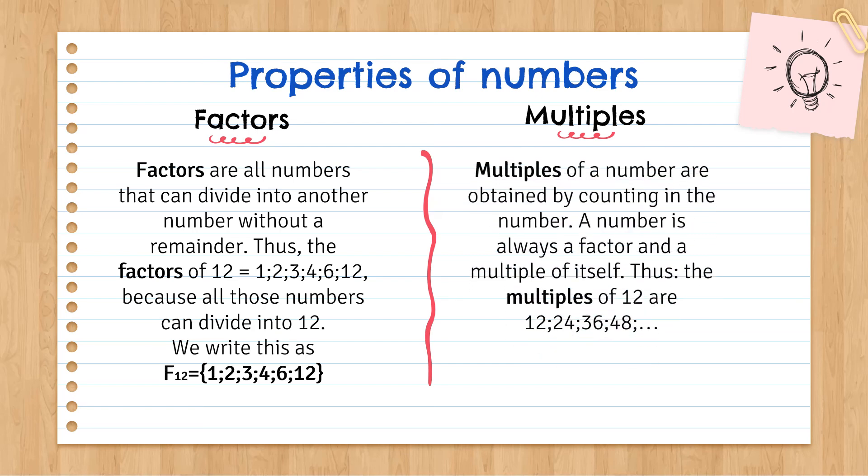Multiples, on the other hand, multiples of a number are obtained by counting in a number. A number is always a factor and a multiple of itself. Thus, the multiples of twelve are twelve, twenty-four, thirty-six, forty-eight. And we carry on with that to infinity by showing it with three dots. We write this as M12, we open the bracket, twelve, twenty-four, thirty-six, forty-eight, dot, dot, dot and close the bracket.